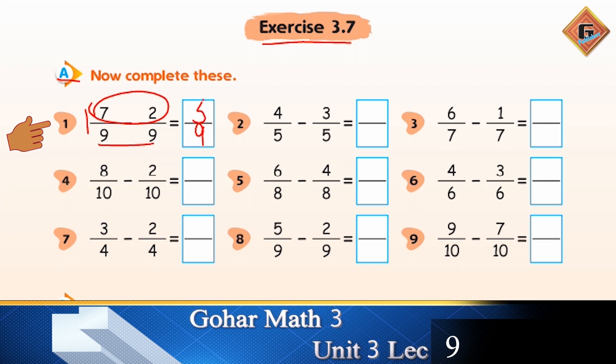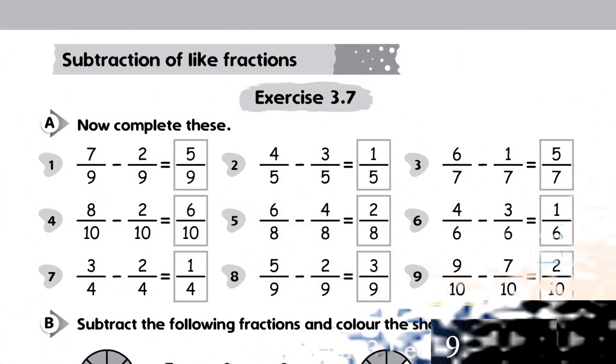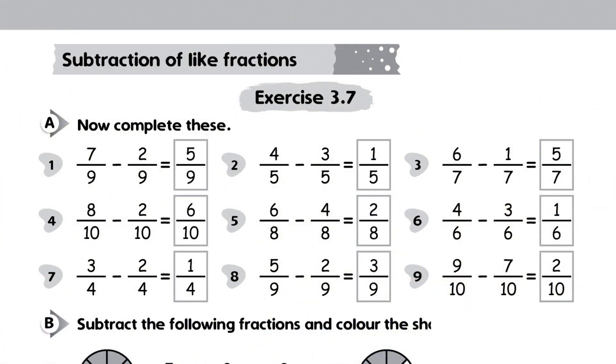Good. The next one is 4 over 5 minus 3 over 5. Again, denominator aapka same rahe ga and 4 minus 3 is 1. Isn't it easy? You are going to do the rest and then check your answers from the screen.